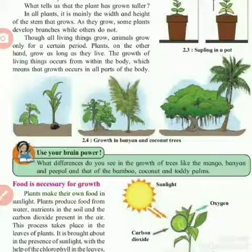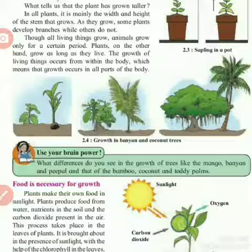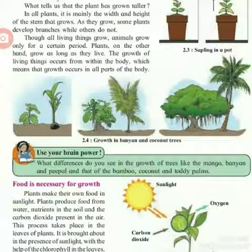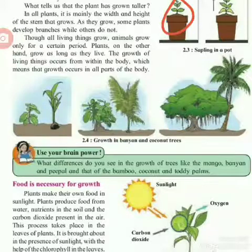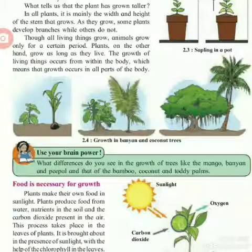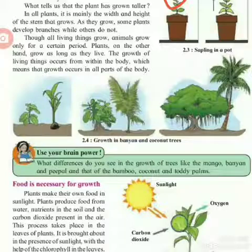If you are seeing picture 2.3, there is a sapling in a pot. For this experiment at home, you have to take one potted sapling and tie a thread to the tip of the sapling like this, keeping the thread stretched and tied to a peg or nail above the plant.